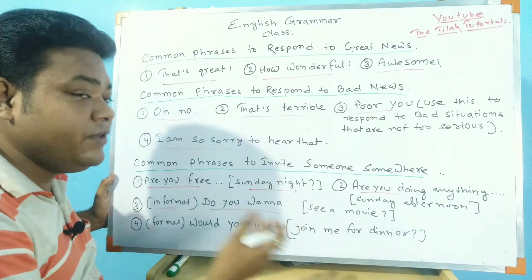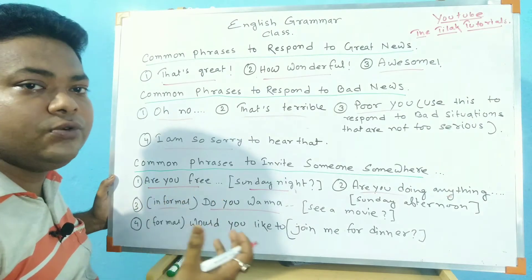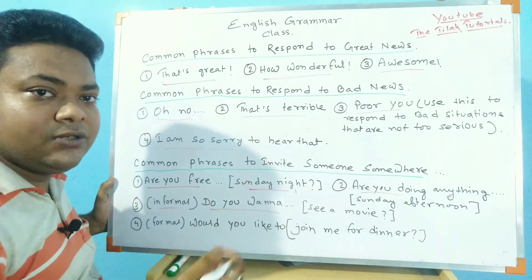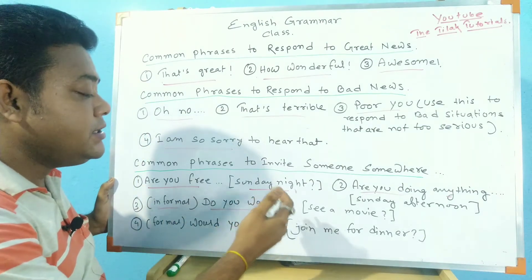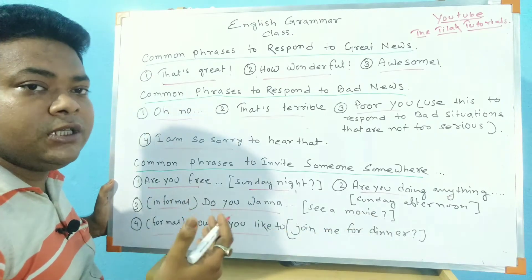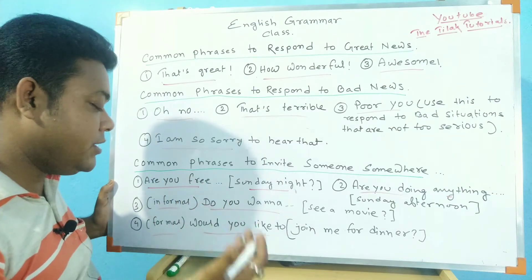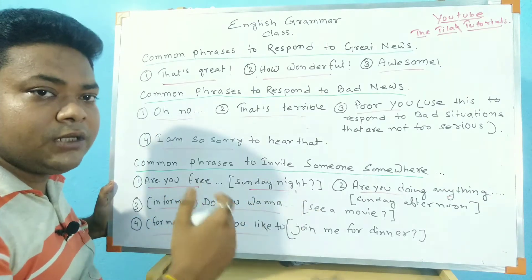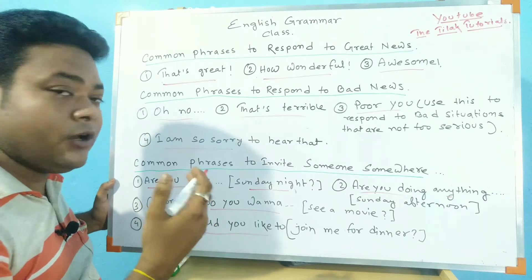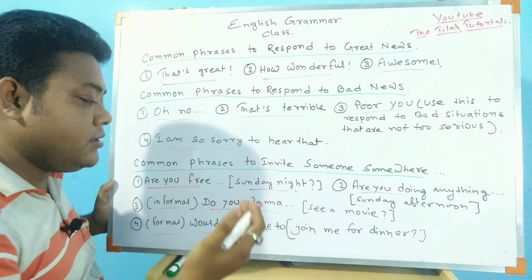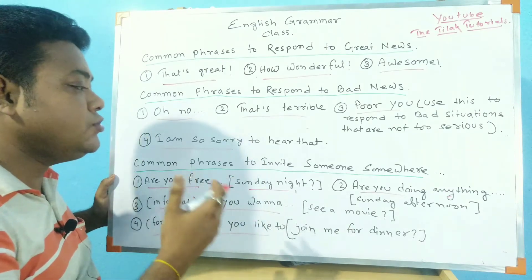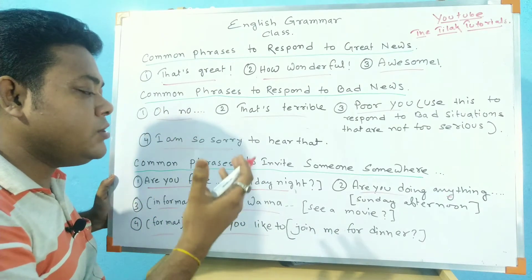In informal ways of speaking, you can say 'do you want to see a movie?' or 'are you free Sunday night?' or 'are you doing anything Sunday afternoon?' In a formal way of speaking, the phrase is 'would you like to join me for dinner?' These phrases are used to invite someone somewhere.